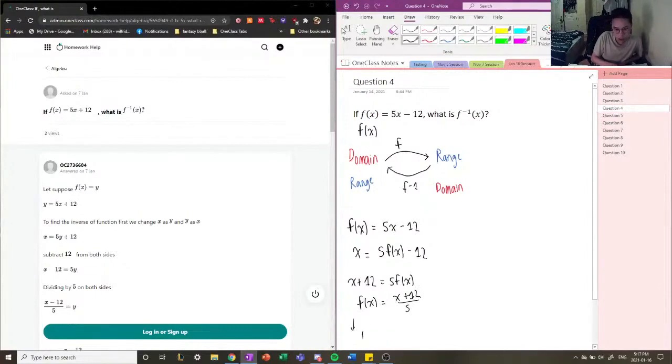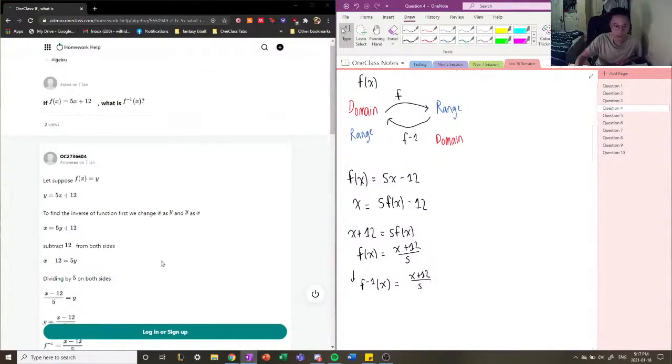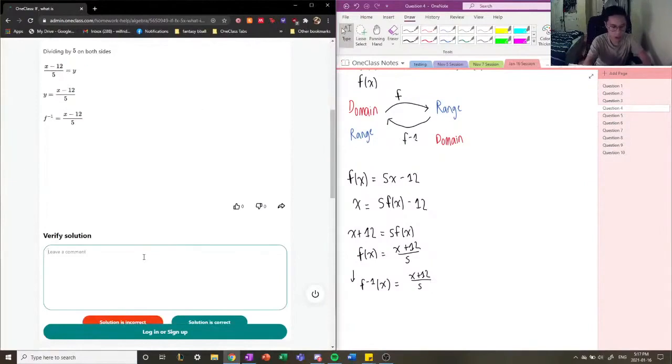And finally, we're just going to write f inverse, because that's the correct notation, equals x plus 12 divided by 5. So that's how you find the inverse function. You basically swap your independent and dependent variable, whatever they are, and then you want to solve for the dependent variable again. And by doing so, you're able to find your inverse function. So this solution is correct. Good work.